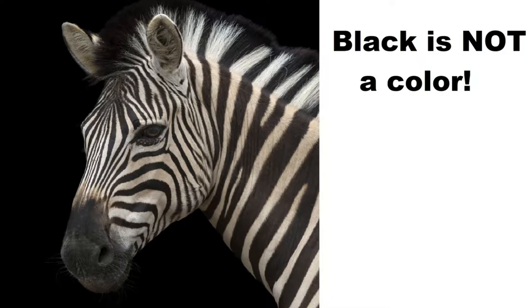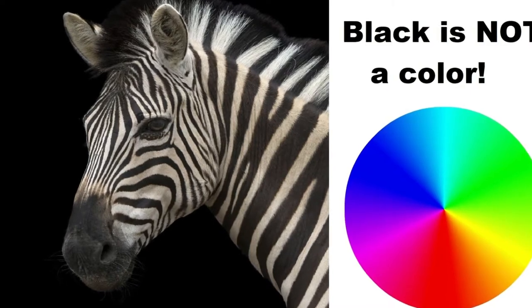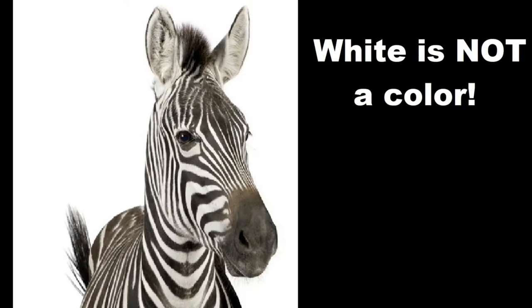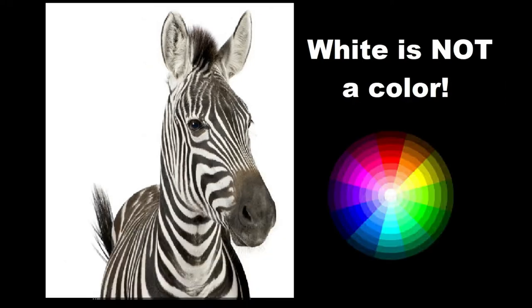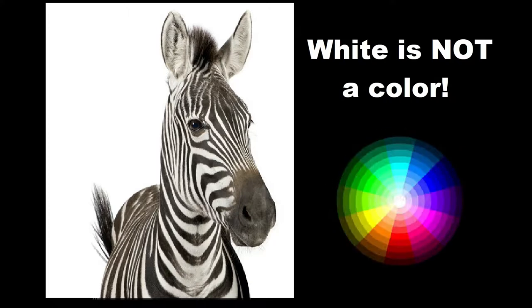Technically, black is not a color. Black is the absence of all colors, such as a black hole in space that sucks out all the color. White also is not a color — white is the combination of all colors together. With that, white or black, depending on how you're looking at it, will represent 0.